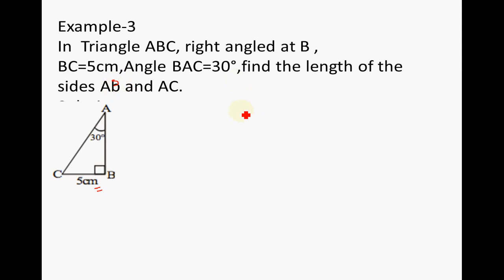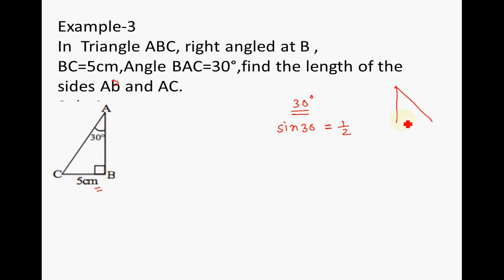Let us see example 3. In triangle ABC with right angle at B, BC = 5 cm and angle BAC = 30 degrees. Find the length of sides AB and AC. Recalling our table of trigonometric ratios, for 30 degrees, sin 30 = 1/2 and cos 30 = √3/2. These values come from the standard 30-60-90 triangle where the side opposite 30° is half the hypotenuse and the side opposite 60° is (√3/2) times the hypotenuse.